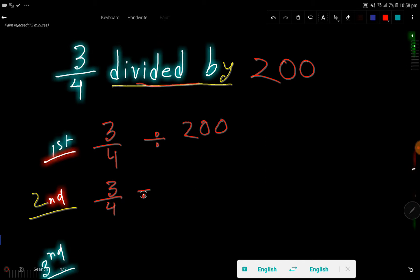In the second step I will just rewrite this problem. We can write 200 like 200 by 1. Look, the value of 200 and 200 by 1 is similar.